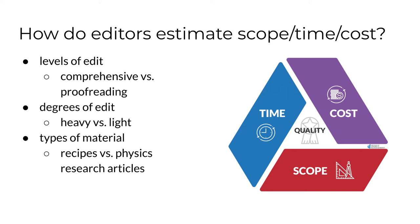Both levels and degrees of edit were reflected in the EFA estimates. One thing their estimates do not reflect is differences for different types of material. A single physics article with multiple tables, figures, and equations is going to take longer to copy edit than a single recipe in a cookbook. There is no such thing as a going rate for editorial work. If you want to make a living as a freelancer, you must charge what Richard Aiden calls the effective hourly rate — a calculation only you can make based on your income needs. The link to Aiden's guidance is in the To Learn More folder in Canvas.